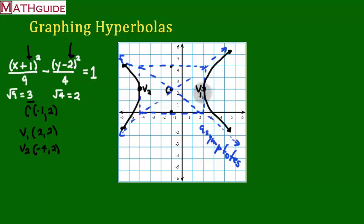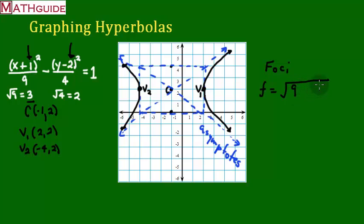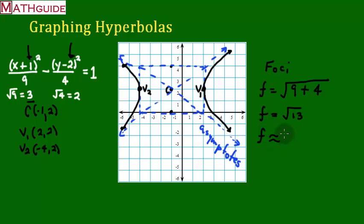Next on our list is figuring out where the foci are. We did this for the ellipse — there's a focal formula. The focal formula takes the two numbers underneath: 9 and 4. Since this problem has a subtraction sign in the middle, we do the opposite and add the two numbers together: 9 plus 4 makes 13. We plug this into a calculator to find the square root of 13, which is 3.6 rounded to the nearest tenth.